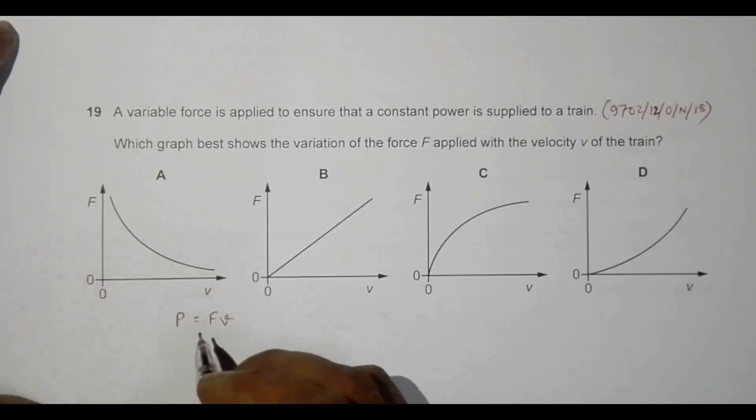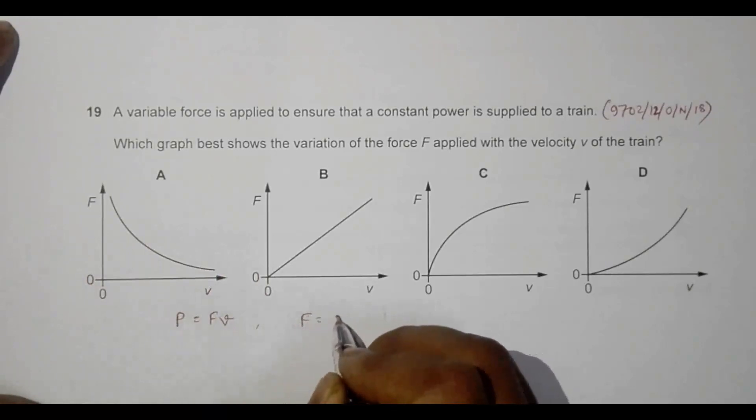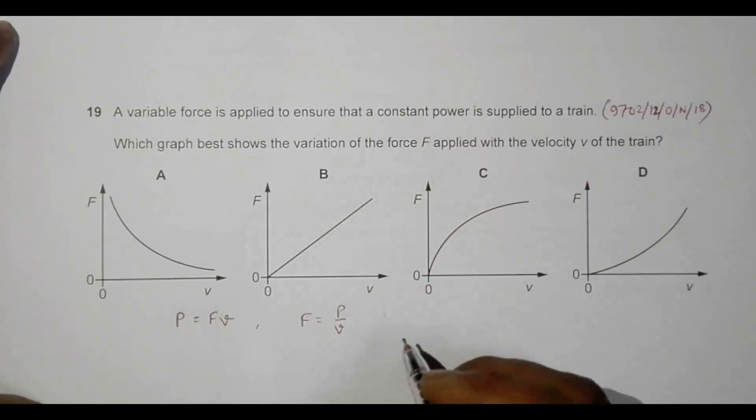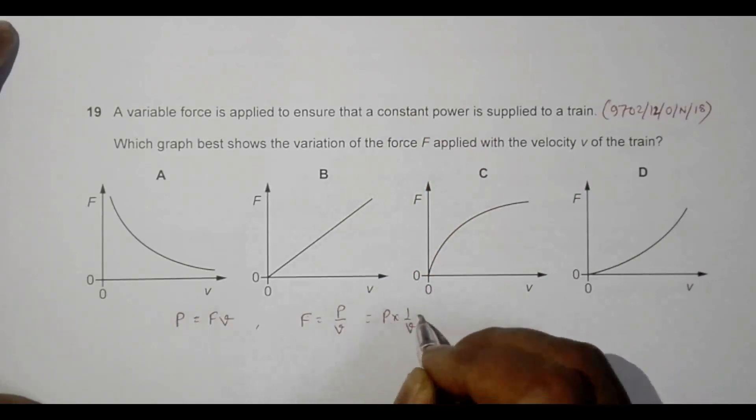Here we have to draw a graph of F and V. This gives me F equals power divided by V. Since P is constant, I can write this as P times 1 over V, which means F is proportional to 1 over V. So F is inversely proportional to the velocity.